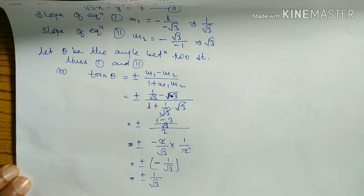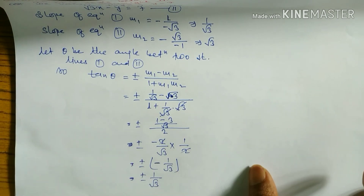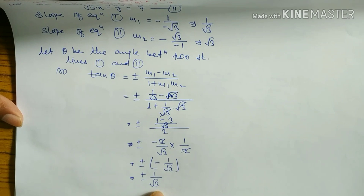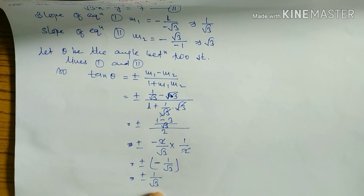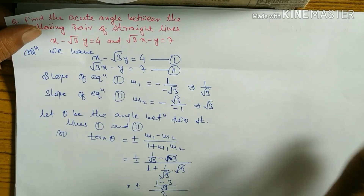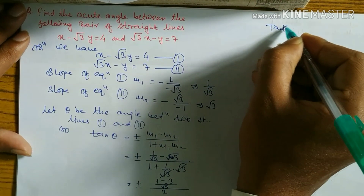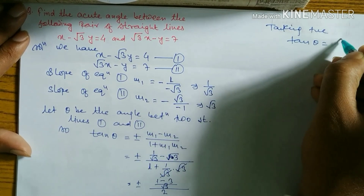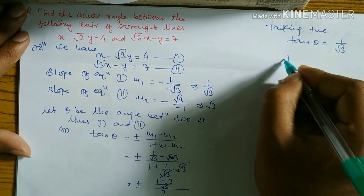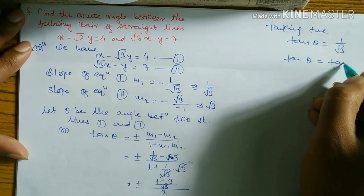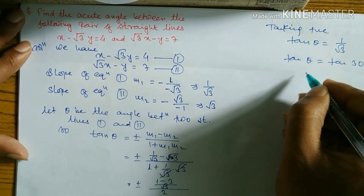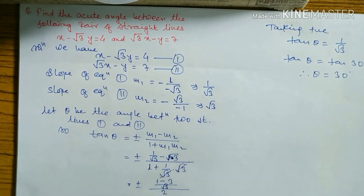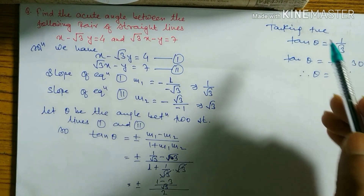To find the acute angle, we take the positive value, because acute angle lies between 0 to 90 degrees where all trigonometric ratios are positive. Taking positive: tan theta equals 1 over root 3, which equals tan 30 degrees. Therefore theta equals 30 degrees.